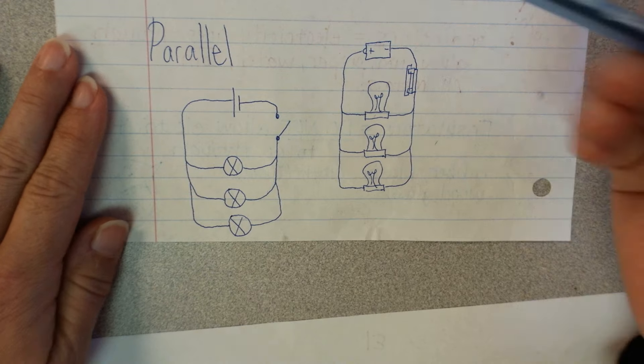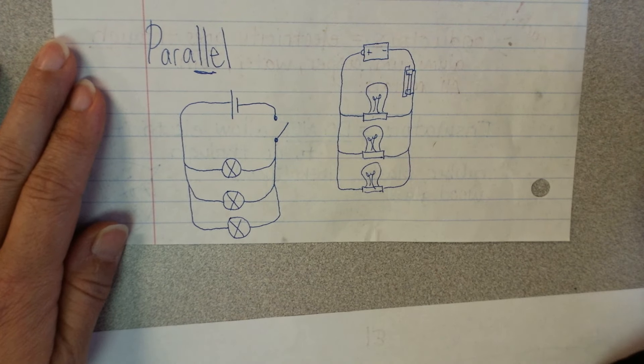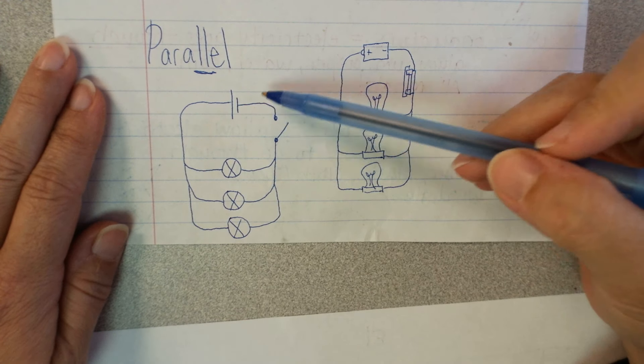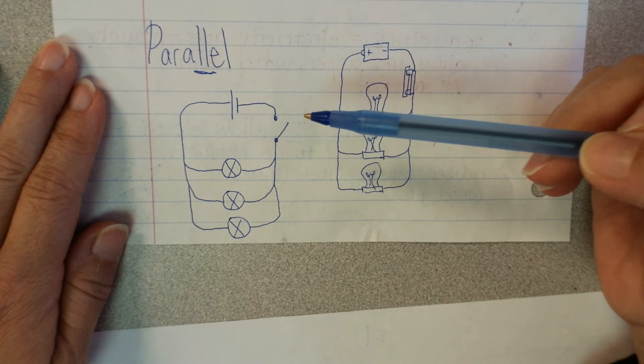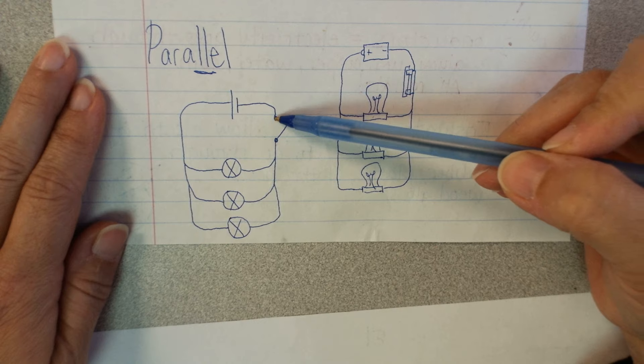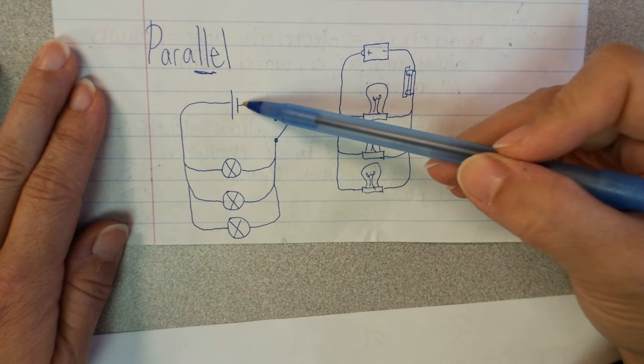Parallel, in contrast, remember parallel, those two L's telling us two or more loops. I've drawn a parallel circuit here that has three loops of electricity. So I come from the negative. Oh, look, I've got an open circuit here, so I couldn't get through, so none of these would work.